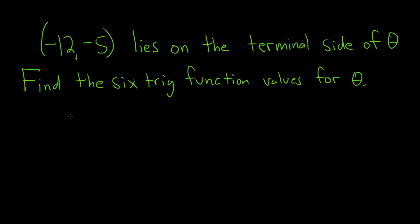In this problem we're told that the point negative 12 comma negative 5 lies on the terminal side of an angle which we're calling theta. And the question is to find the six trig function values for theta.